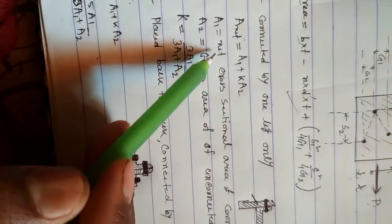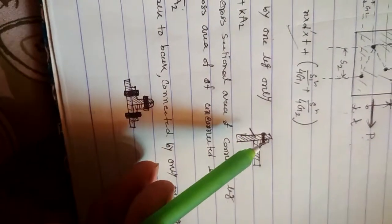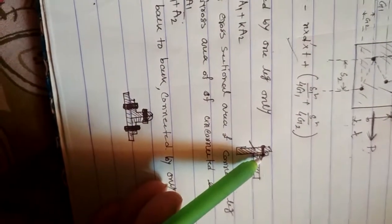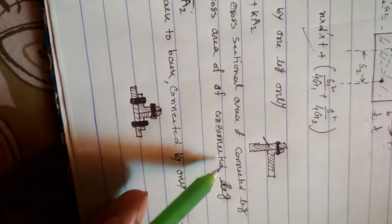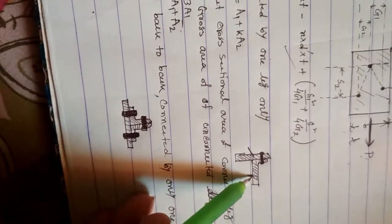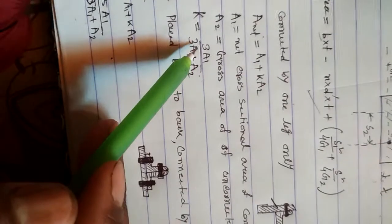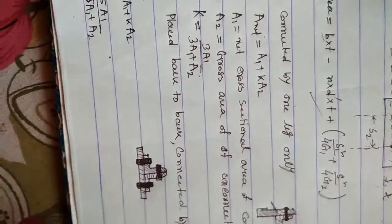Here A1 is the net cross-sectional area of the connected leg, and A2 is the gross area of the unconnected leg. The factor k is given by 3A1 / (3A1 + A2).